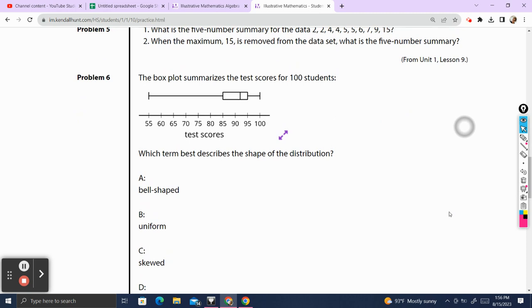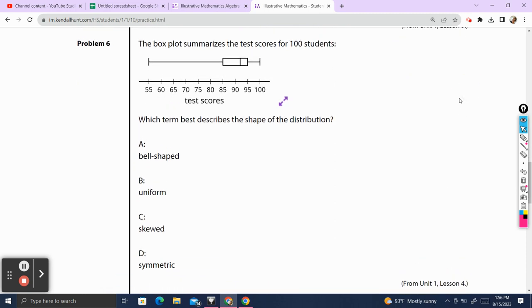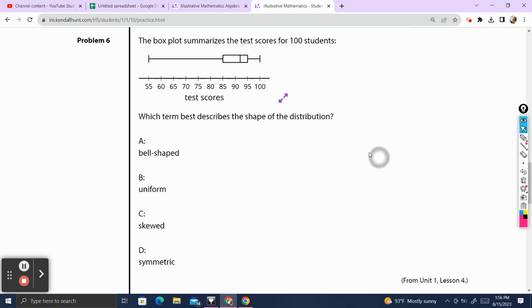Problem number six. The box plot summarizes the test scores for 100 students. So we've got this box plot over here, I know where my min is, my max is, my median, my q1, my q3. Which term best describes the shape of the distribution?